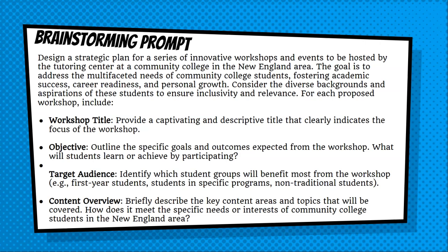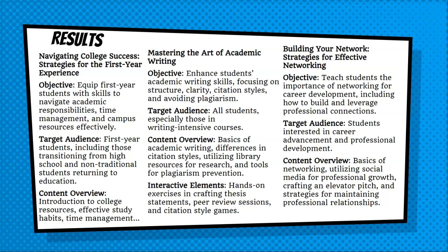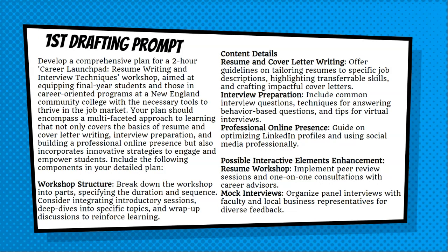When it comes to brainstorming, AI can definitely identify a range of things you might not have thought of and extend your thinking. In this prompt, I asked AI to create a plan for a series of workshops that the center could hold for a New England community college. I also made clear what to include with each workshop idea — things such as the target audience, content overview, objectives, and more. You can see the basics of the first three workshops it offered: college success, academic writing, and networking, along with who the ideal students are for each session and additional information like content overview and interactive elements. Things I could have done myself, but having AI do it got me there much faster.